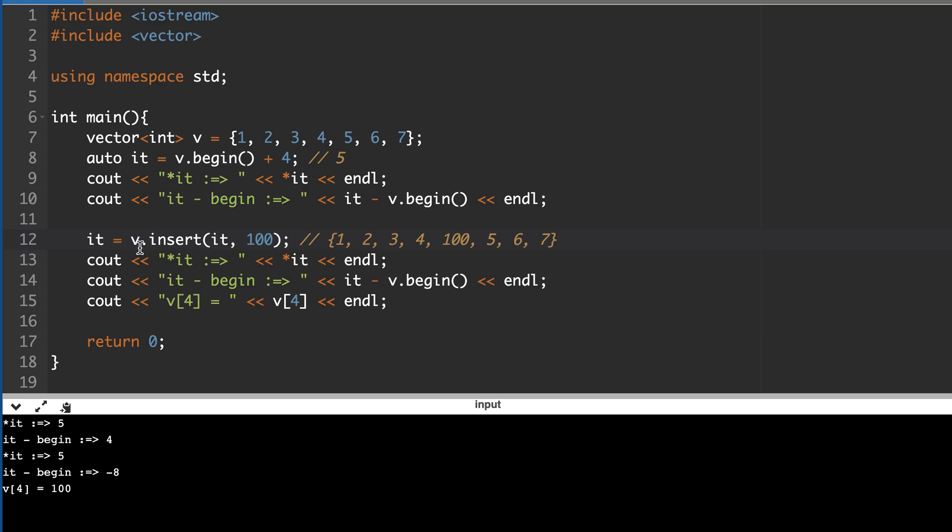So what's the way to fix it? So this iterator is no longer valid. So we can validate it with this. So insert also returns the updated iterator where it inserted, so now this iterator is updated here. So it should be valid and it should return 4. So 100 is inserted at this position. So this will return iterator pointing to 100. So now when we do star it, it should print 100, and it minus begin should print 4 as earlier, and this should match with v[4]. Everything will be valid now. So everything is in line: it's 100, it's 4, it's 100.